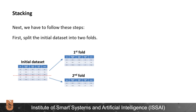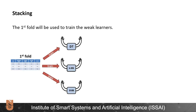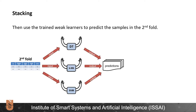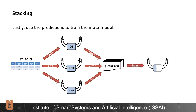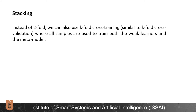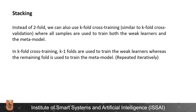Next, we have to follow these steps. First, split the initial dataset into two folds. The first fold will be used to train our weak learners. Then, use the trained weak learners to predict the samples in the second fold. Lastly, use the predictions to train the meta model. Note that we shouldn't use the predictions made on the first fold to train the meta model. Instead of two-fold, we can also use k-fold cross-training, which is similar to k-fold cross-validation, where all samples are used to train both the weak learners and the meta model. In k-fold cross-training, k-1 folds are used to train the weak learners, whereas the remaining fold is used to train the meta model.